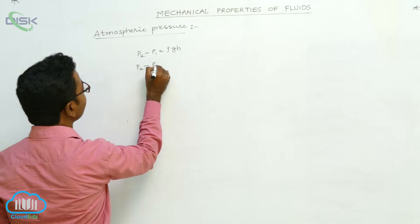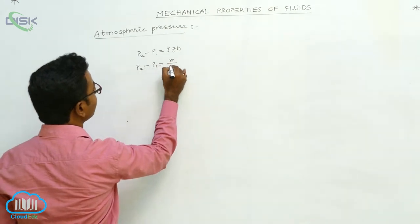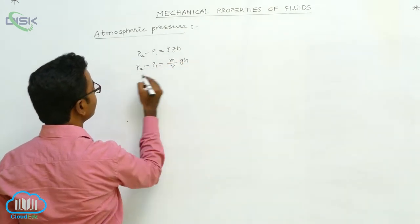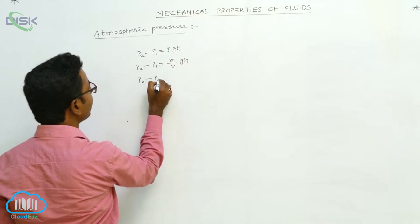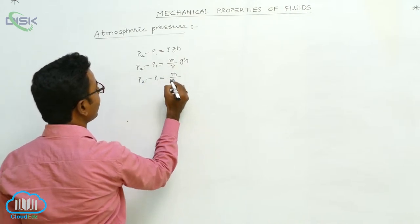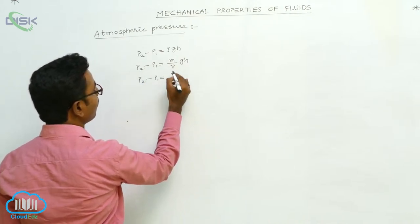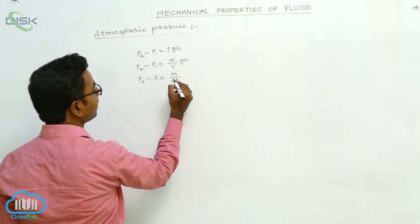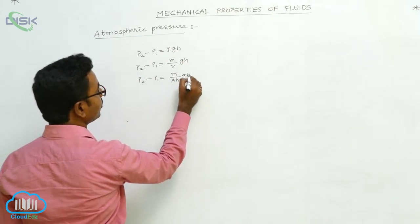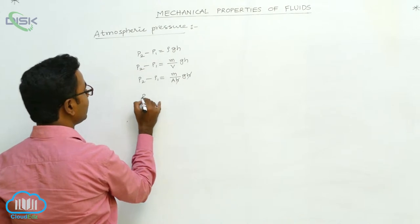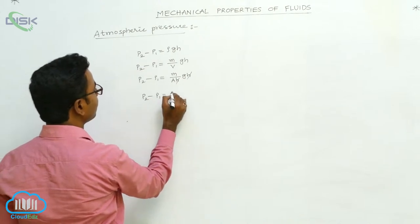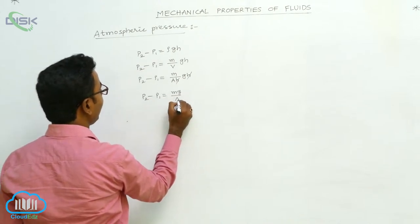P2 minus P1 is equal to rho — that is, density, which is mass by volume — into g h. P2 minus P1 is equal to M by V into g h. The volume can be written for a cylinder as A into H, area of cross-section into height, into g into H. H cancels, so P2 minus P1 is equal to MG by A.